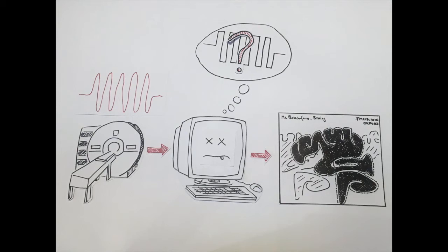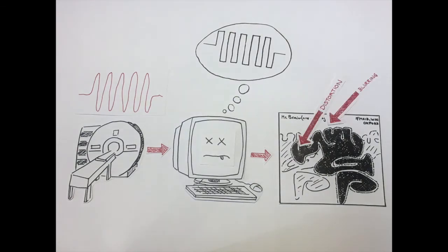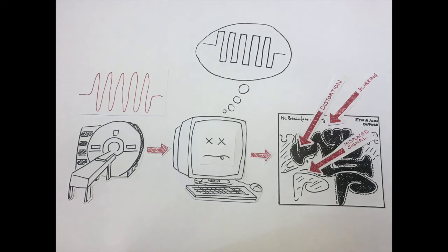You can see that the image that comes out does not quite look like the brain we saw before. Instead there are a lot of strange things going on. The image is distorted, it is blurred, and there is even some part of the brain image totally in the wrong place.